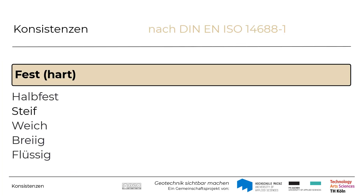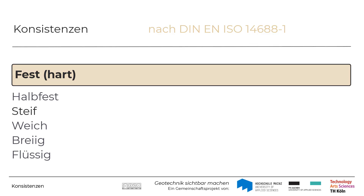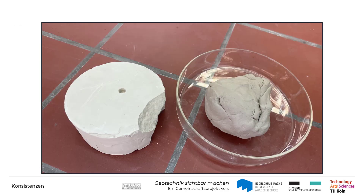In dieser Sequenz zeigen wir Ihnen einen mittelplastischen Ton in fester Konsistenz, das heißt sein Wassergehalt liegt unterhalb der sogenannten Schrumpfgrenze. Dies kann man daran erkennen, dass der Boden ausgetrocknet ist und eine helle Färbung aufweist.